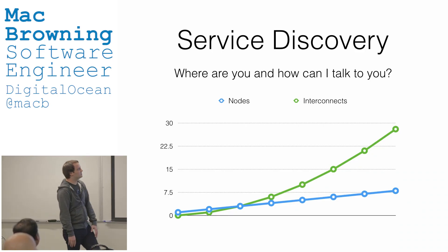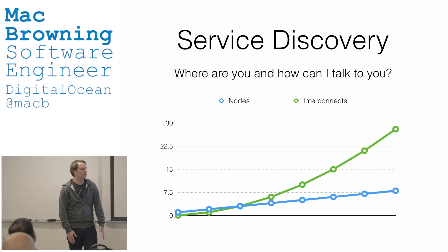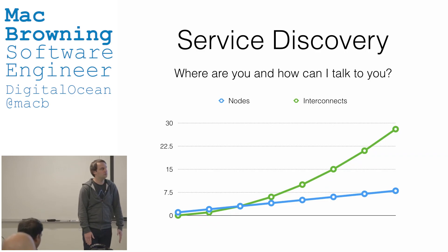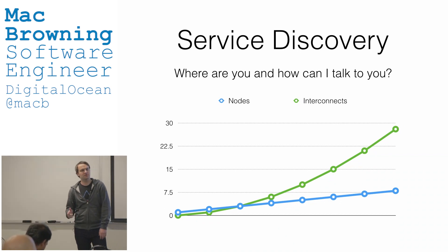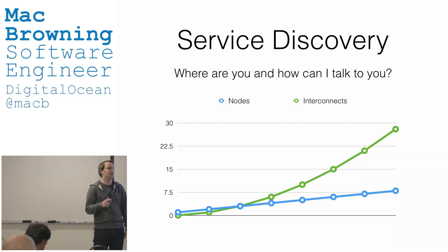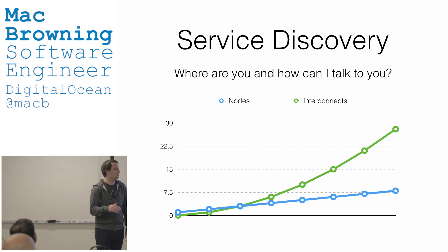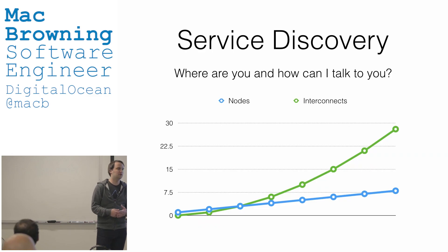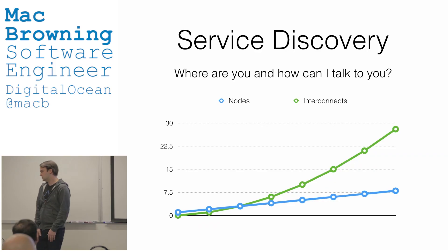This leads to the problem of service discovery, loosely defined as: where are you and how can I talk to you? The pattern you'll see is as nodes increase — nodes being either services or instances of those services — the interconnectedness of those nodes increases dramatically. It's not a linear increase, more exponential. A node can talk to many services and the services might have many nodes, so that just becomes a very large mess of interconnected pieces.